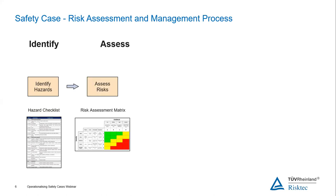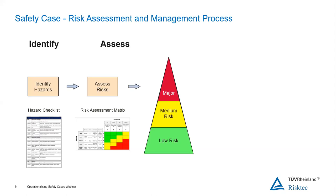You'll see a risk assessment matrix here — this is the means normally used to assess risk. We look to plot on the matrix the consequence severity against the likelihood, and that gives us our risk. What's the consequence if the hazard was released, and how likely is that to happen? That gives us a position on the risk assessment matrix. That position will be one of three things — in this example it's red, yellow, or green: major risk red, medium risk yellow, low risk green. What we're doing here is filtering through our hazards and the risk level associated with them so that we can do different things with them.